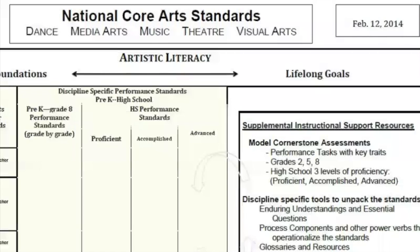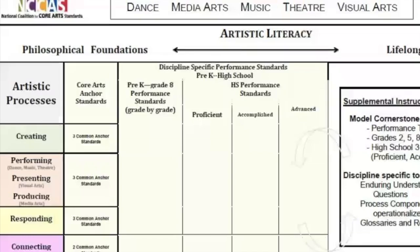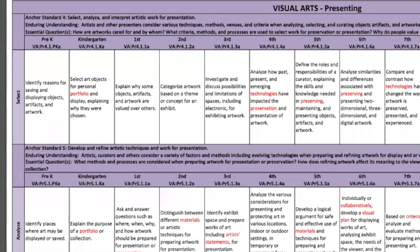This comes from the framework matrix for the national core art standards. There are four criteria for the artistic processes: creating, presenting, responding, and connecting, and there are three common anchor standards for each of the criteria. The one I've chosen is from the presenting criteria and it's the first one out of the three standards.